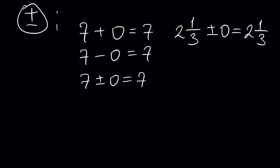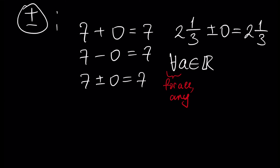We can write this generally: for any number a — this symbol in mathematics means 'for all' or 'any' — so for any number a from the set of real numbers, a plus or minus zero equals a. This is the mathematical notation for this rule.